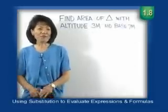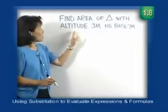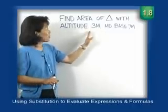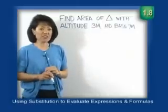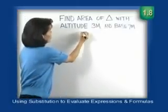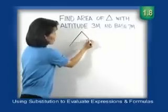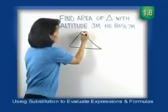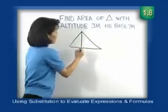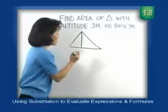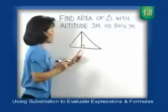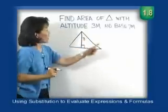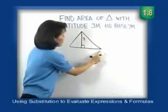Let's look at our next example: finding the area of a triangle with an altitude of 3 meters and a base of 7 meters. When approaching a problem involving a geometric shape, it's helpful to draw a picture and label the given information. Let's draw a triangle and mark the altitude — a line perpendicular to the base from the opposite vertex. The altitude is 3 meters and the base is 7 meters.